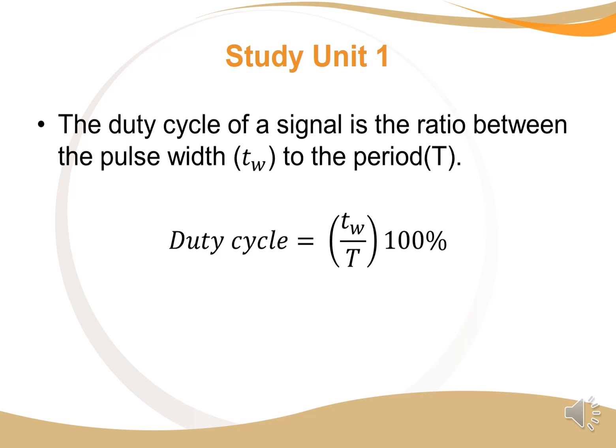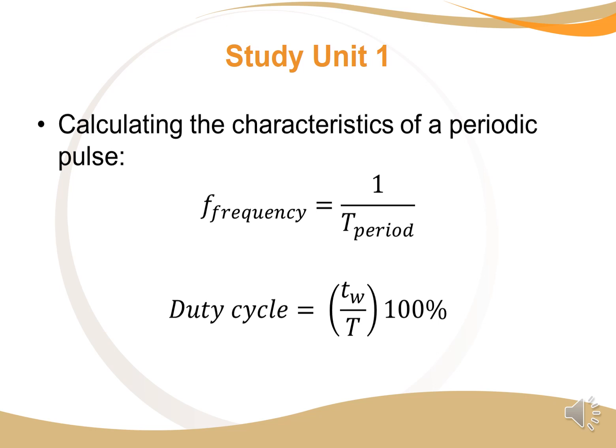Also importantly, we have what we call the duty cycle, and it's the ratio between the pulse width, i.e. how long the pulse is active for, and divided by the period. This is the formula for working our duty cycle, and we just times it by 100 to get it to 100%. If we want to calculate the characteristics of a periodic pulse, we want to work out the frequency, we take 1 over the period, and conversely, if you want to work out the period, it is 1 over frequency. And here is the formula for duty cycle once again.